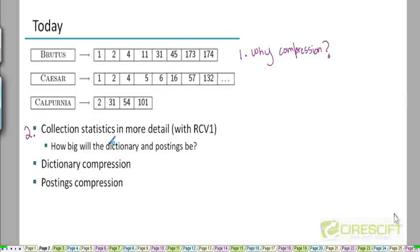And how do we estimate the length of the postings list that will be there in the index. So estimating the size of the dictionary and the size of the postings list is something we will do in the second section. And again, we are going to rely on the Reuters corpus that we were looking at in the last one or two lectures.